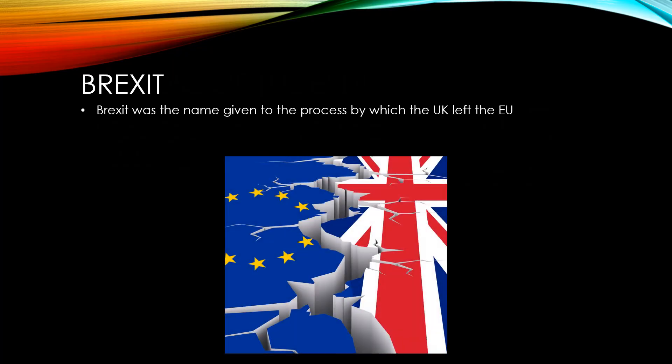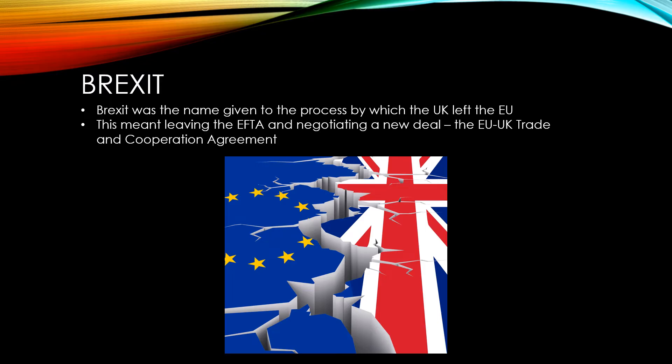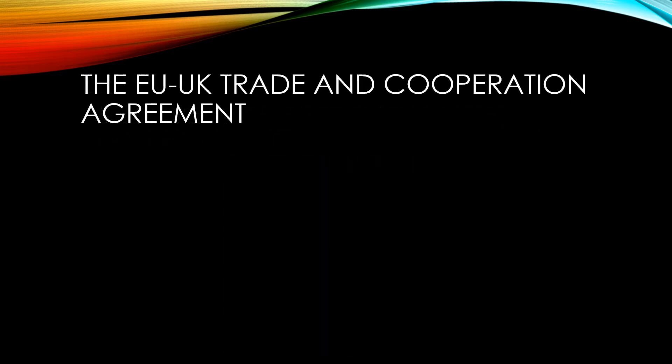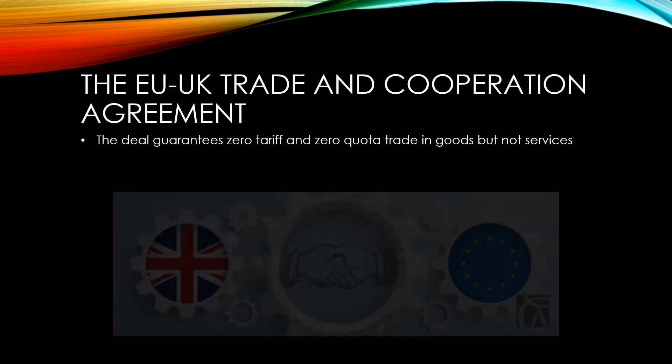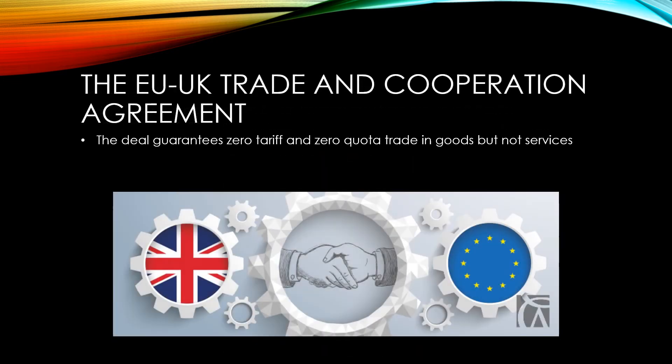Brexit was the name given to the process by which the UK left the EU. This also meant leaving the European Free Trade Area and having to negotiate a new deal. This new deal is called the EU-UK Trade and Cooperation Agreement, which guarantees zero-tariff and zero-quota trade in goods, but this does not extend to services.